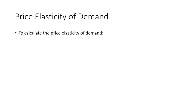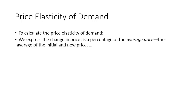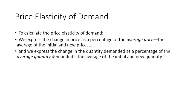To calculate the price elasticity of demand, we express the change in price as a percentage of the average price. The average price is found by taking the sum of the old price plus the new price, divided by two. Similarly, we express the change in quantity demanded as a percentage of average quantity demanded — that is, the average of the initial and the new quantity.